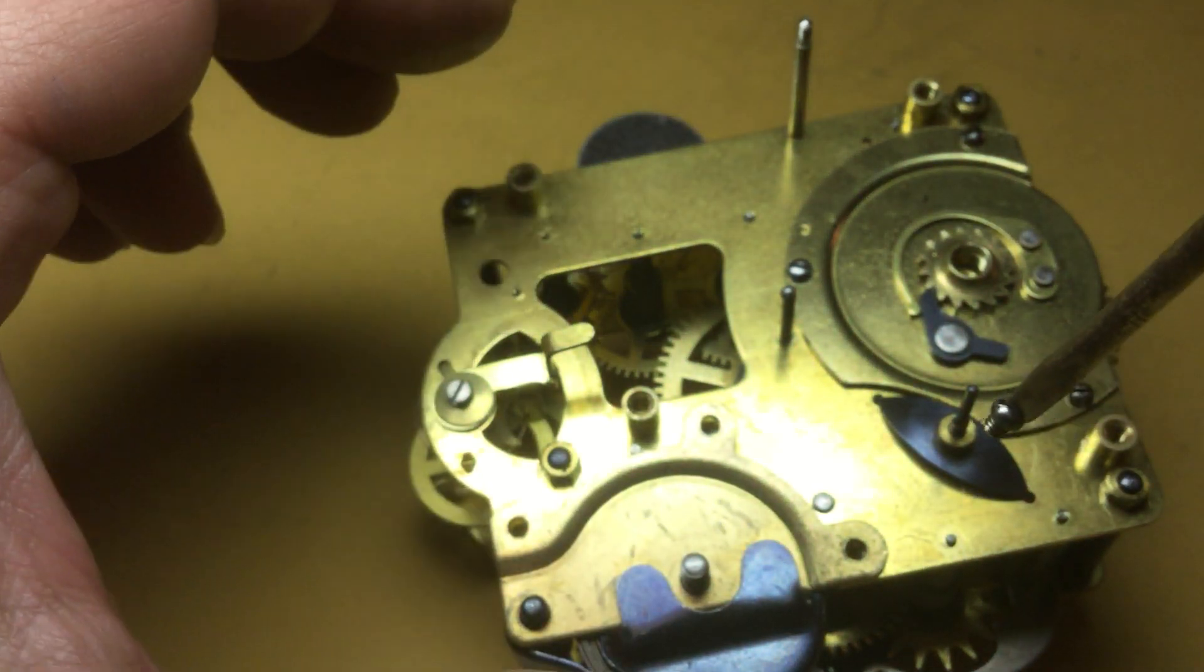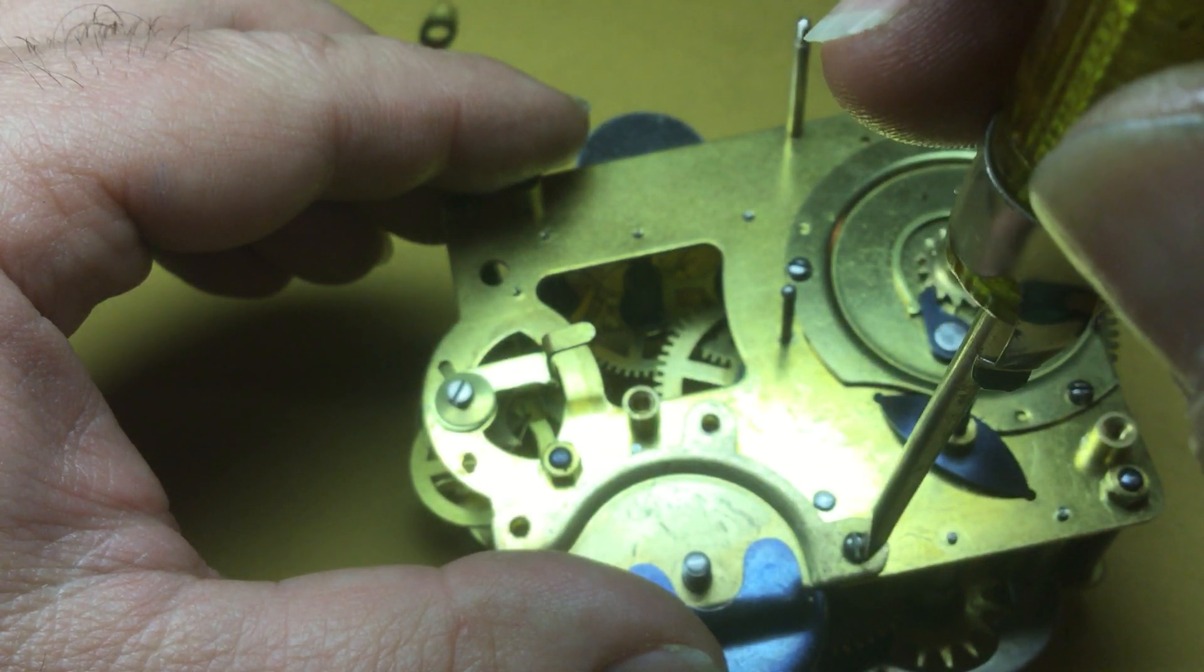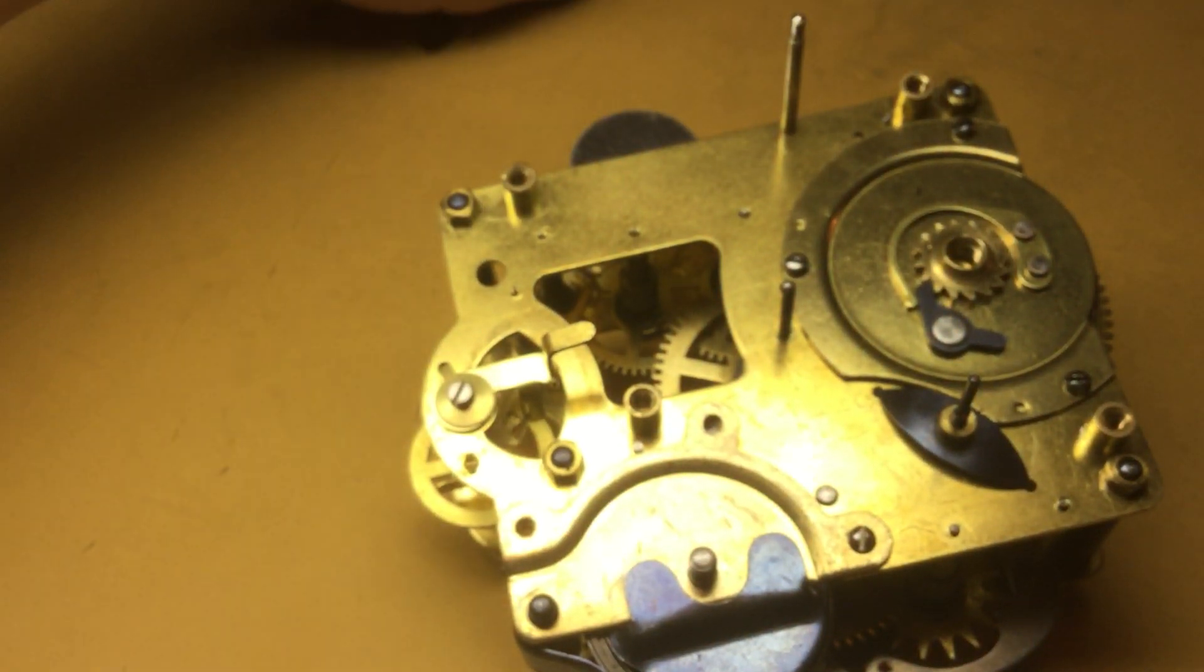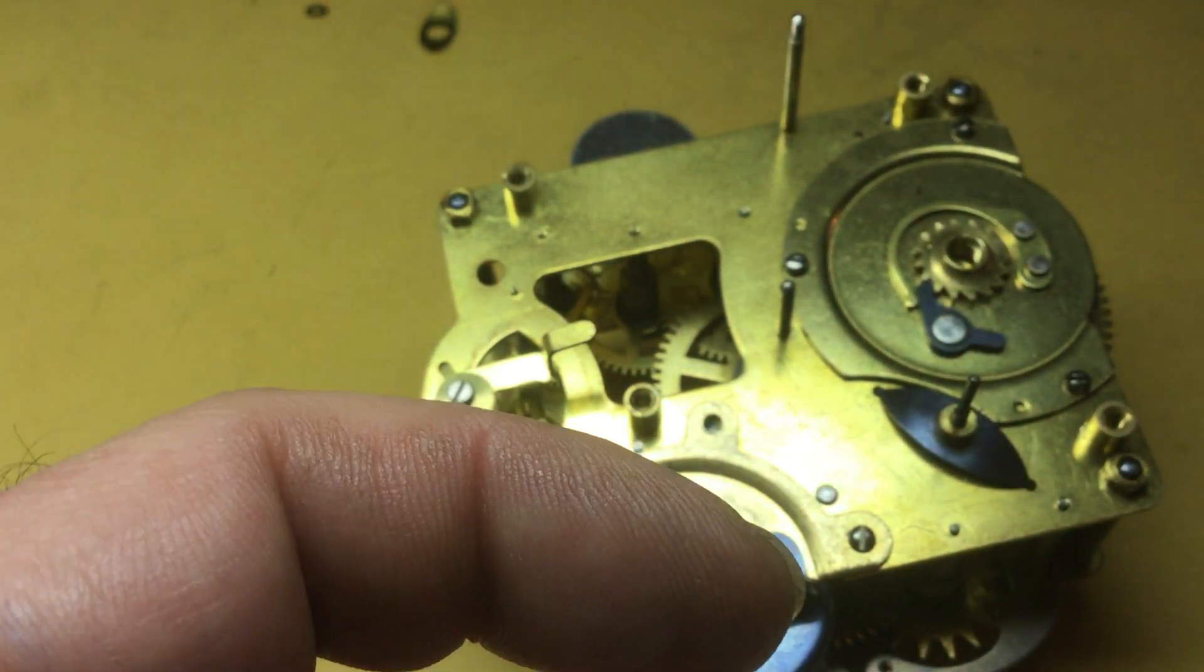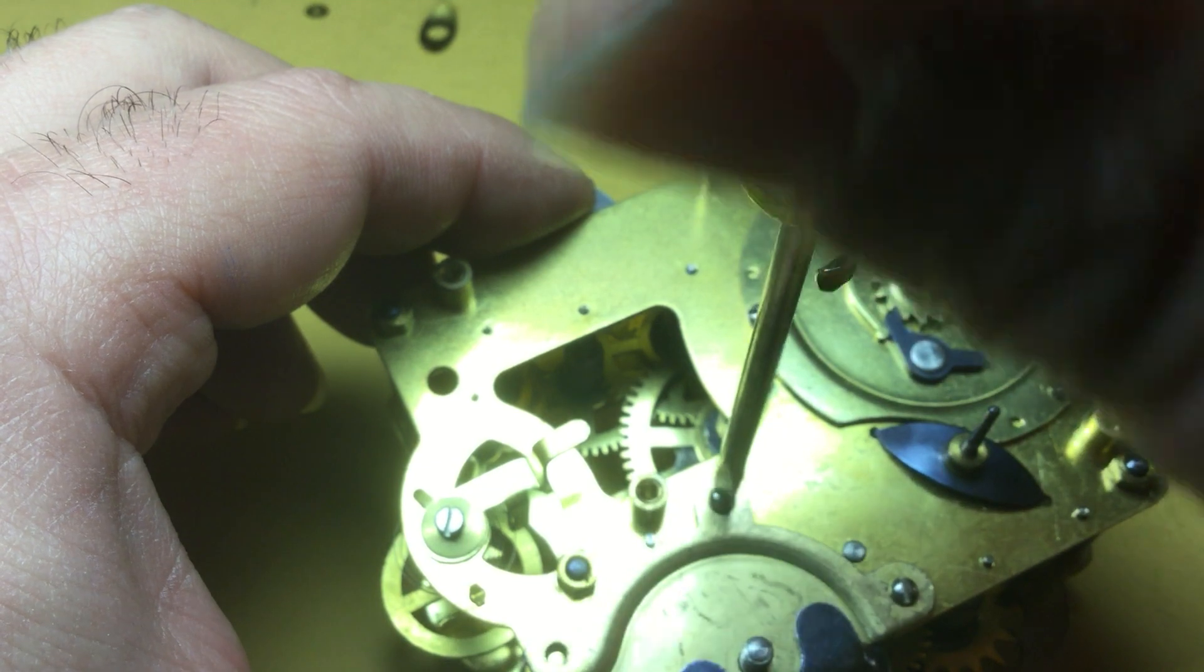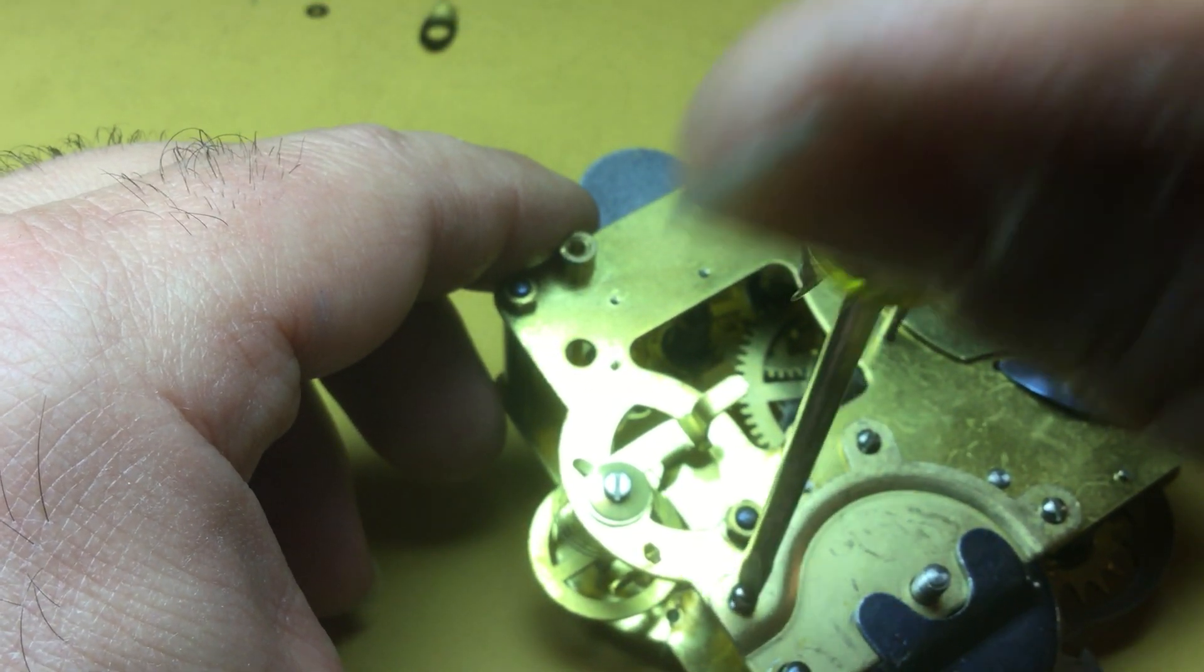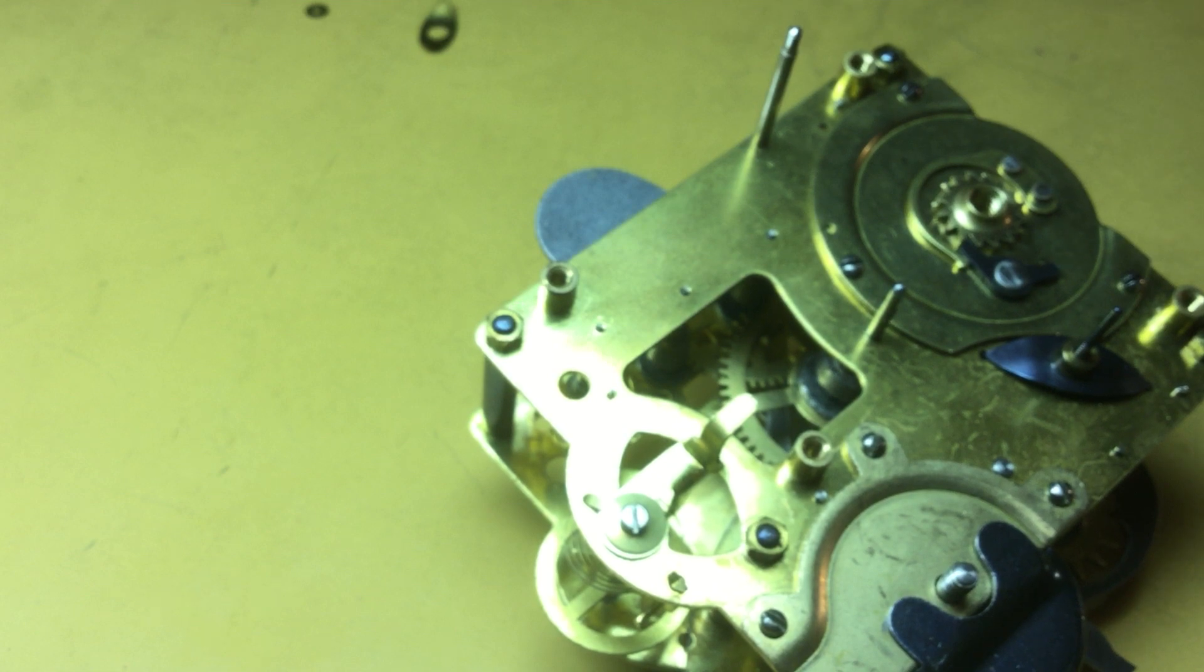Interesting that the brass of the alarm bridge didn't clean up as nice as the rest of the movement. And I think I mentioned this in the description for one of the earlier parts, that this movement was lacquered. I've never noticed a Westclox movement that had a lacquer finish on the movement plates. But this one did. It was lacquered. Movement plates were lacquered. I don't think this bridge plate was lacquered though.